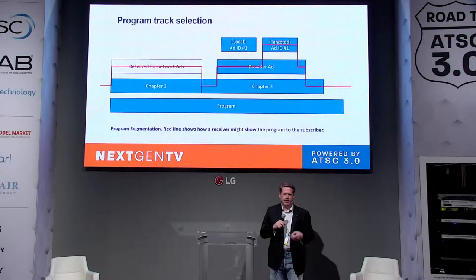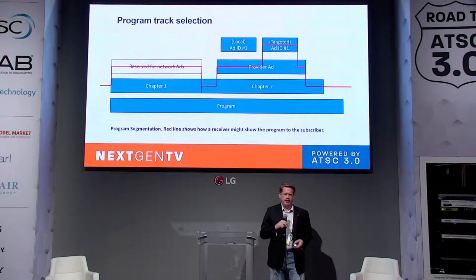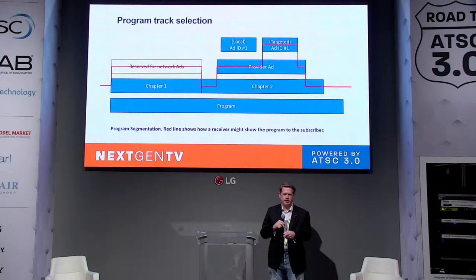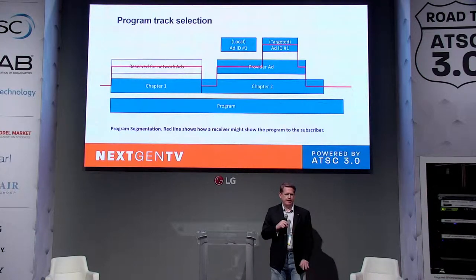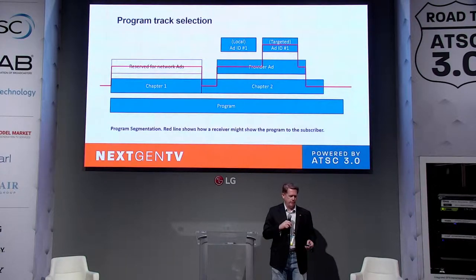The same applies at the client device — it can have track selection. Instead of the broadcaster selecting the track for a targeted ad in the cloud, it's now the client. The selection can be done both at the broadcaster in the cloud or on the client device, depending on which approach in the protocol stack is preferred.